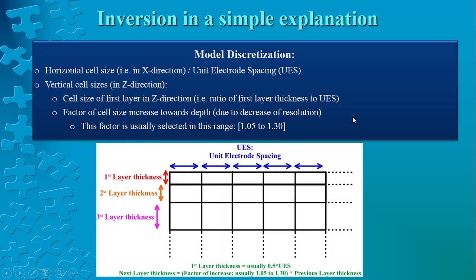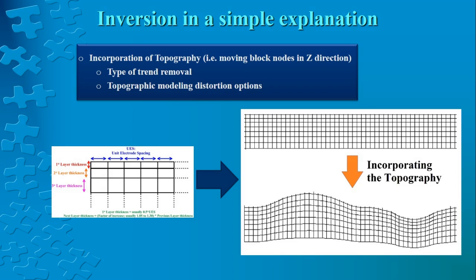The cell size of the first layer is usually considered to be half of the unit electrode spacing most of the time, though this is not a strict rule — in some cases we have to change it to achieve a better model.